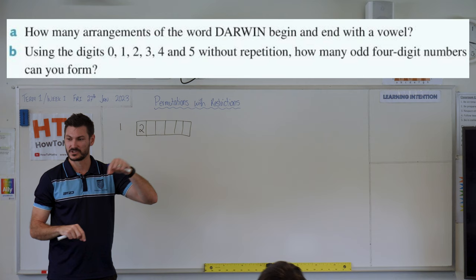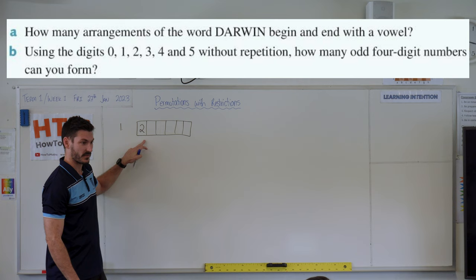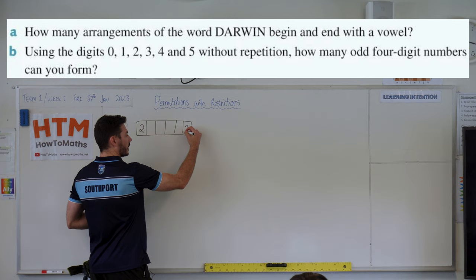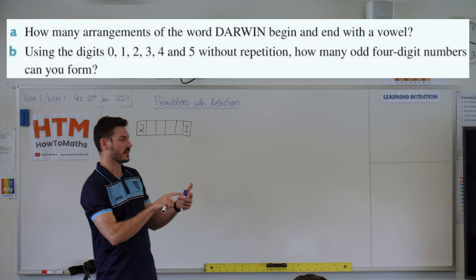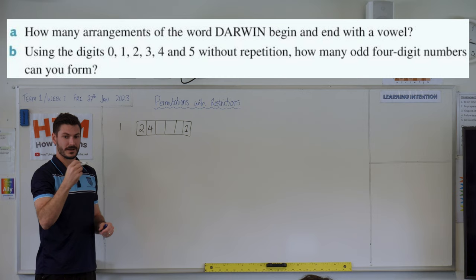Remember, I don't care which vowel is at the start, which one's at the end. I just know I've got two options for the start, but if I've used one up at the start, I now only have one vowel left over. So at the end, I've only got a one. And then in the middle, I don't care. It can be the rest of the consonants, the D, the R, the W and the N. So my first consonant, I have four choices. My next consonant, I have three choices, then two choices, then one choice.